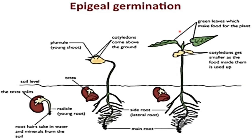In epigeal germination, the cotyledon comes above the ground level after germination. Epigeal means above the ground, and this type of germination is seen in dicot plants.